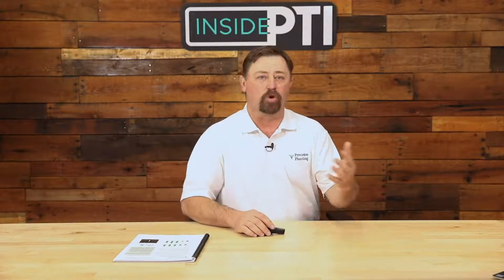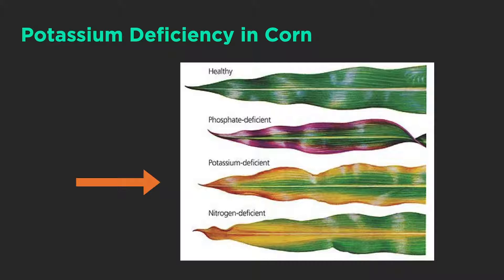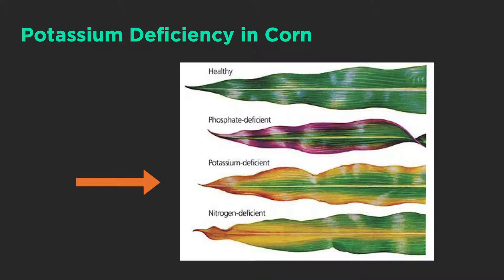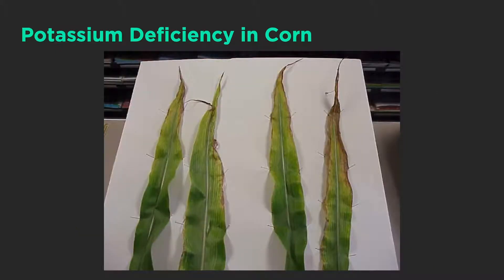If we look at deficiency in the field — here are some corn leaves — potassium deficiency is going to show up as discoloration on the outside edges of the leaf. This symptomology shows when you have run out of potassium in the field. This is the opposite of nitrogen: nitrogen shows up in the middle of the leaves, while potassium shows on the outside — usually yellowing and firing on the outside edges.